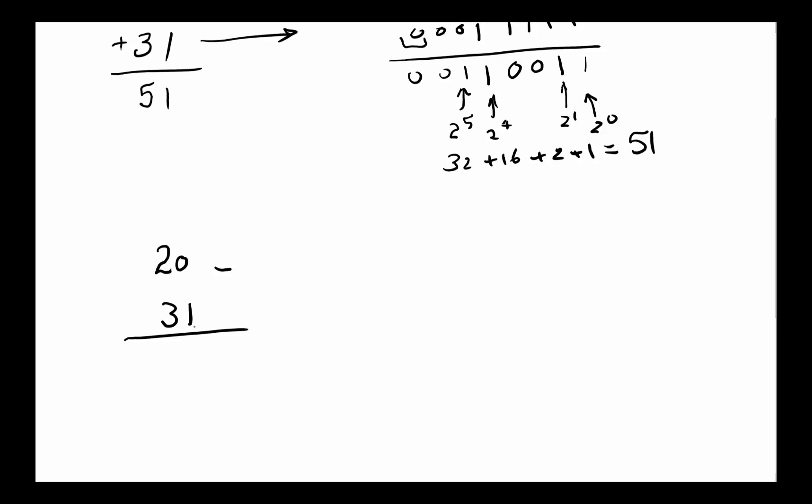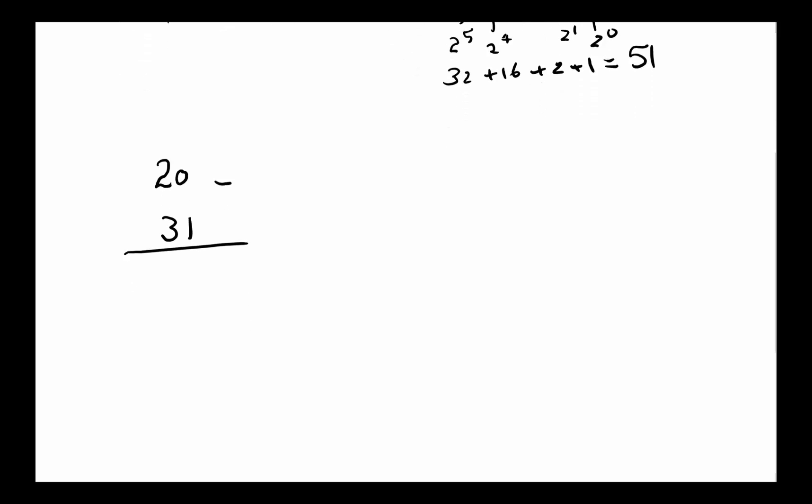The way we do it in 2's complement is that instead of doing this operation, we're going to do this operation. To you it might sound the same, but it makes a difference to us because now for the 31, since this is negative, we've got to do a 2's complement. Anytime you have a negative number, you have to do 2's complement work.